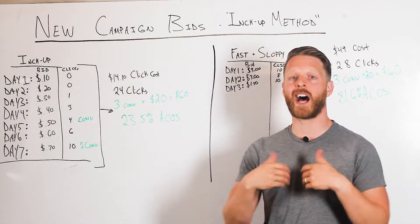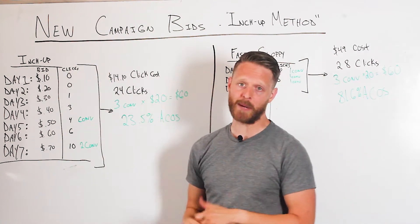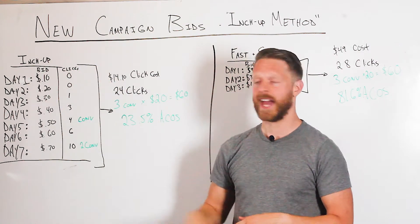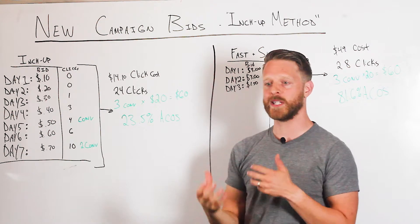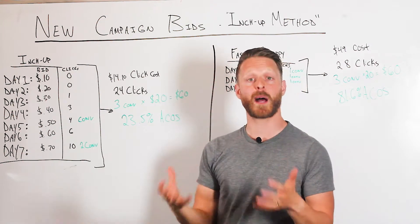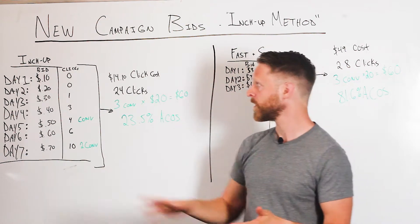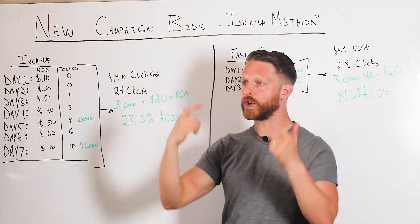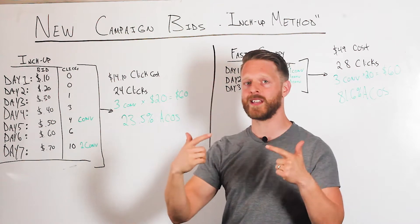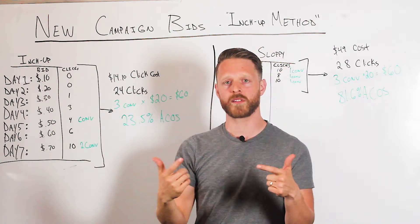The strategy that I always recommend is the inch up method. We thought a lot about this when we designed Bids by Badger, the bid optimizer inside Ad Badger.